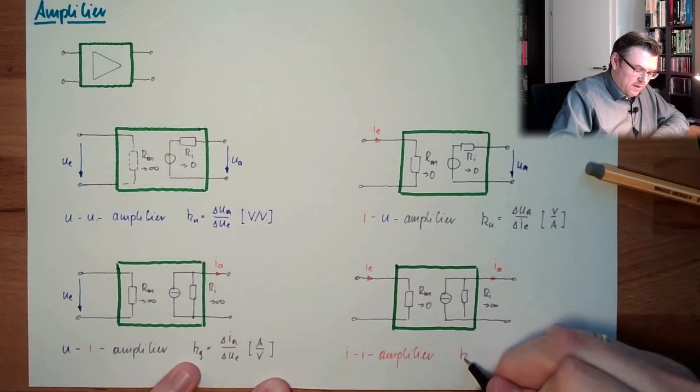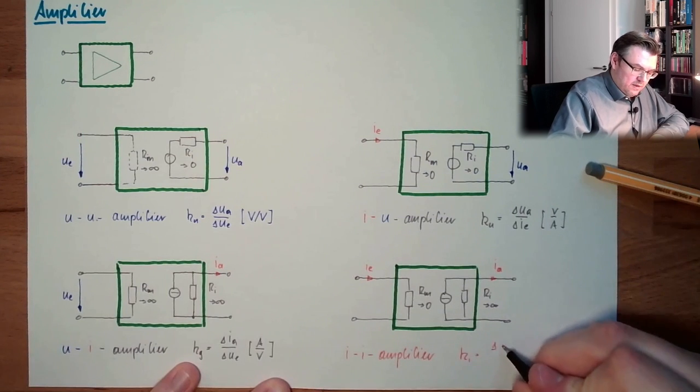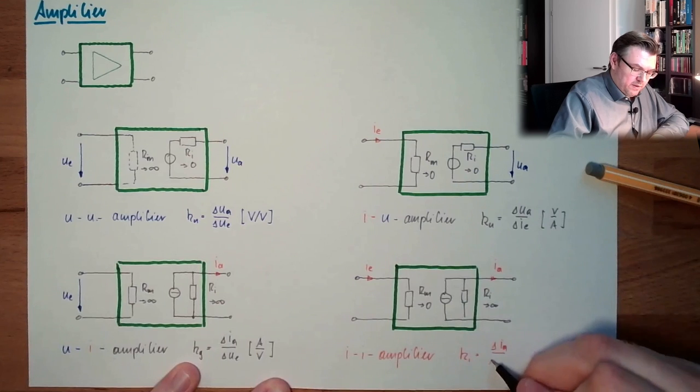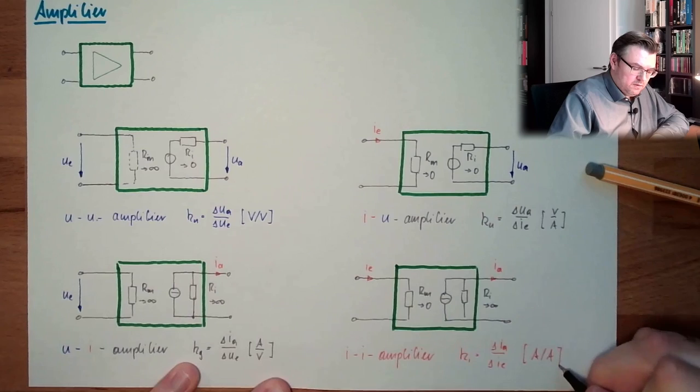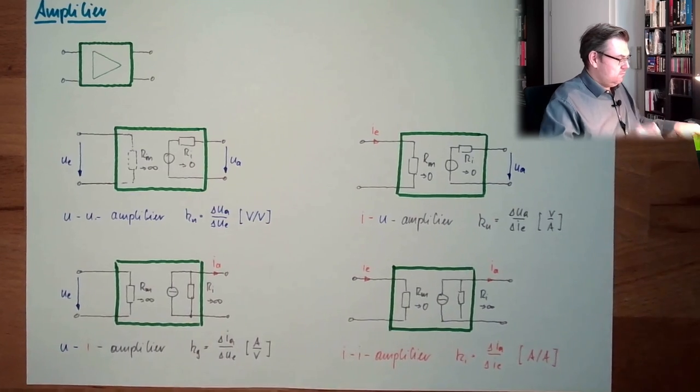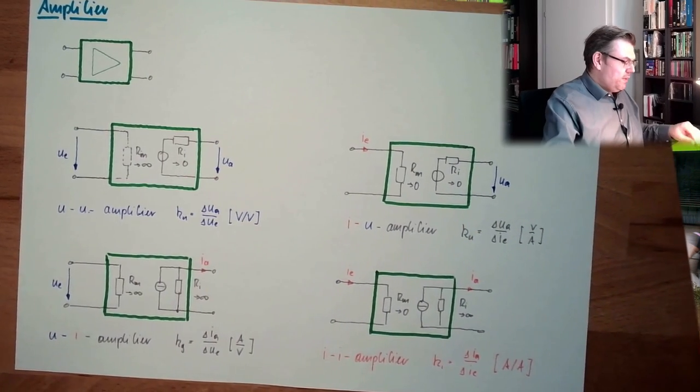Ki is delta Ia divided by delta Ie and this is amps by amp. So we can think about, the source has some internal resistance, this RI and this RI makes problems. This RI makes simply problems.